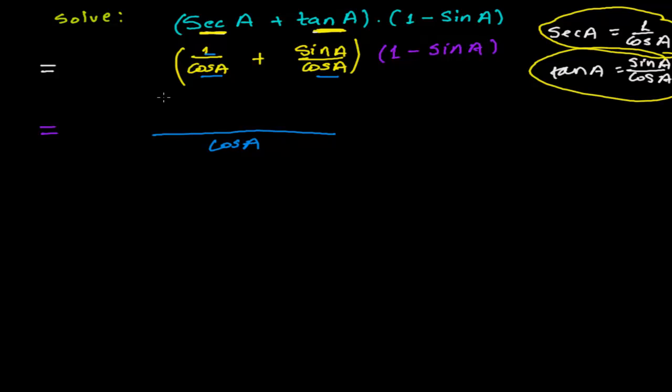Now see here, I have 1 plus sin A multiplied by 1 minus sin A. This is a pattern - A plus B times A minus B.